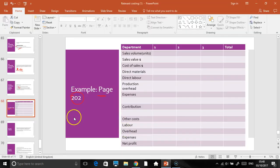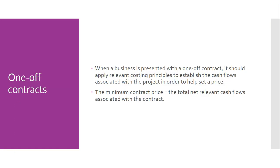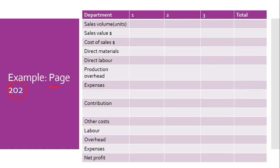That covers shutdown decisions. The key is a relevant cost focus — concentrate on variable costs, compare the relevant benefits and relevant costs, and then factor in any qualitative considerations before making a final decision.